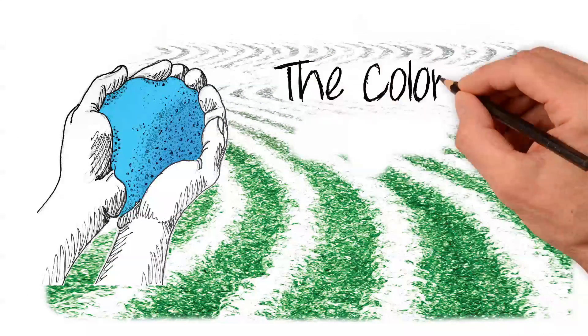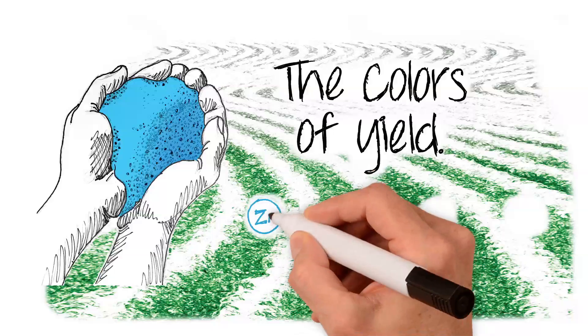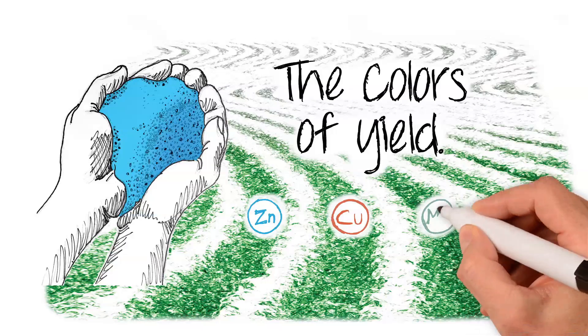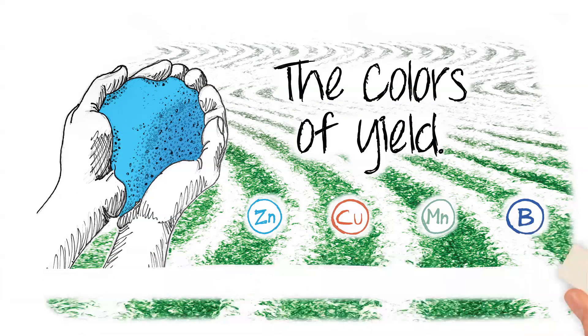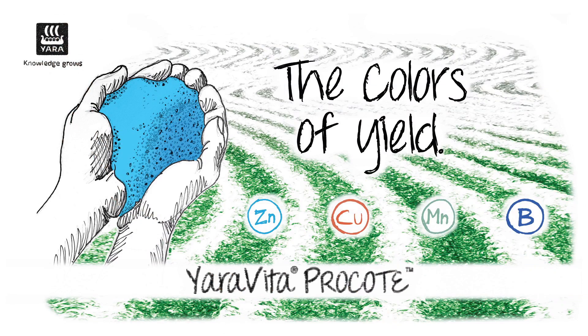And with each micronutrient easily identifiable by a different color, for instance, zinc is blue and copper is red, you can see the difference. That's why Yara calls it the colors of yield, Yara Vita Pro Coat.